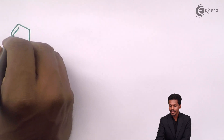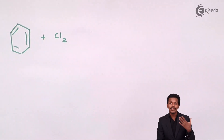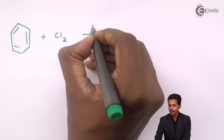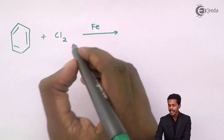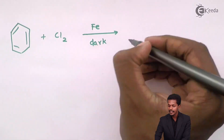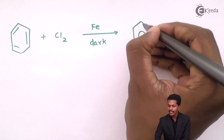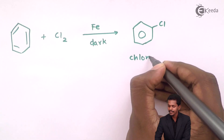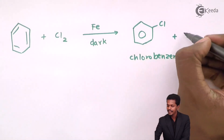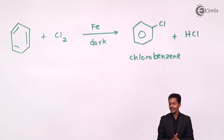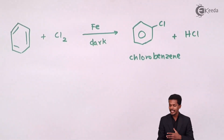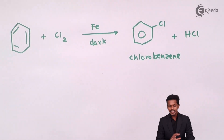For example, to prepare chlorobenzene, we take benzene and react it with Cl₂ in the presence of Fe as a catalyst in dark conditions. The product obtained is chlorobenzene along with HCl as a byproduct. Similarly, benzene reacted with Br₂ under the same conditions — Fe catalyst and dark environment — gives bromobenzene.